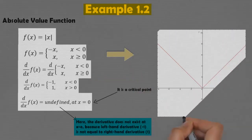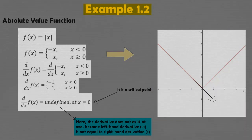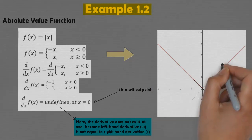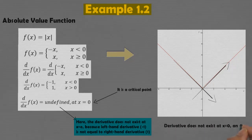Visualizing its graph, the left-hand derivative equals −1 and the right-hand derivative equals 1, and since they are not equal, x = 0 is a critical point.